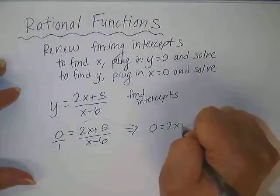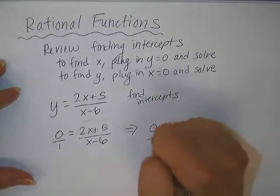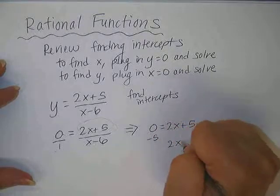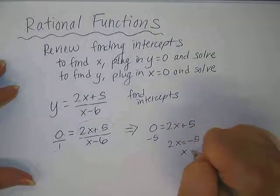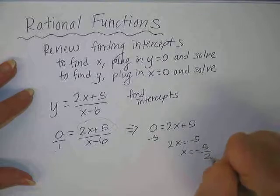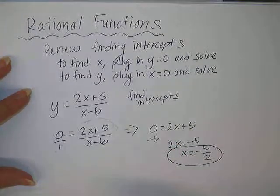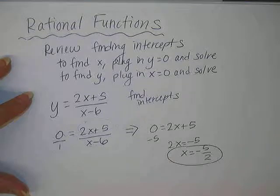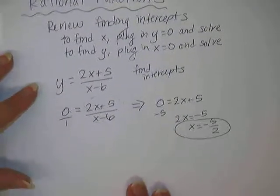So all we end up with is 0 equals 2x plus 5. Move the 5 to the other side. So 2x equals negative 5, and therefore x will equal negative 5 halves. So there's the x-intercept. There might be more than 1, depending on the problem.